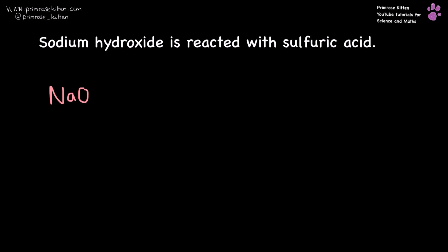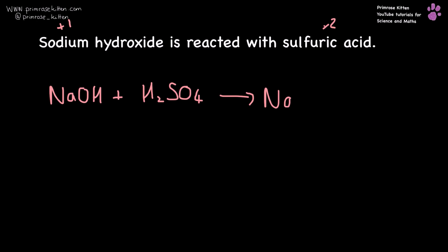Sodium hydroxide, NaOH, is reacted with sulfuric acid. What we're going to get is our ions swapping over. Sodium is plus one, sulfate is minus two, so that is going to be Na2SO4 plus H2O. I need two of the sodium hydroxide and two of the water, and I'm sorted.